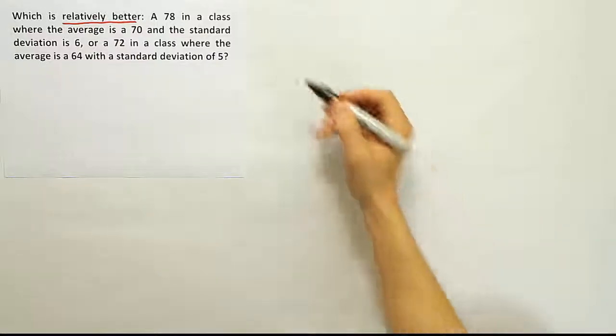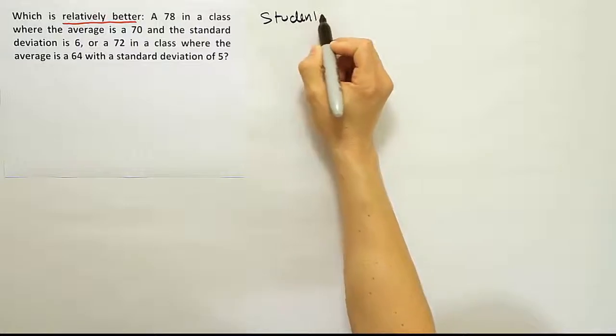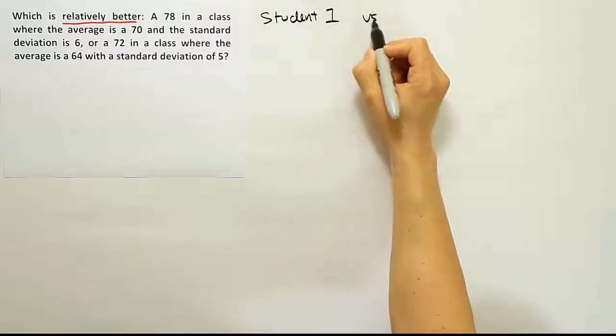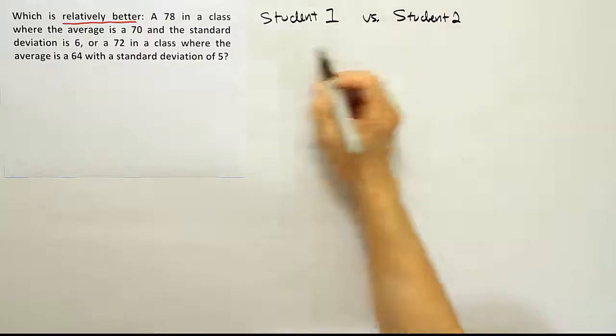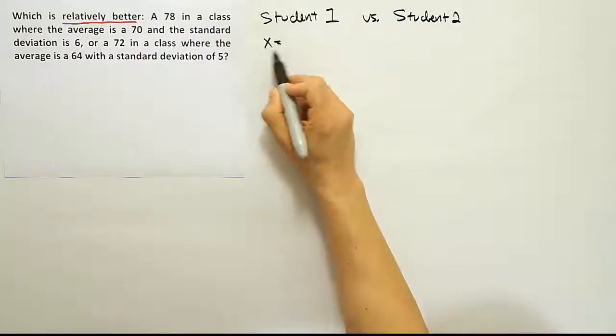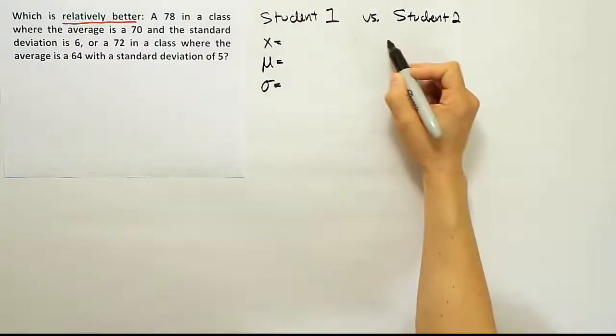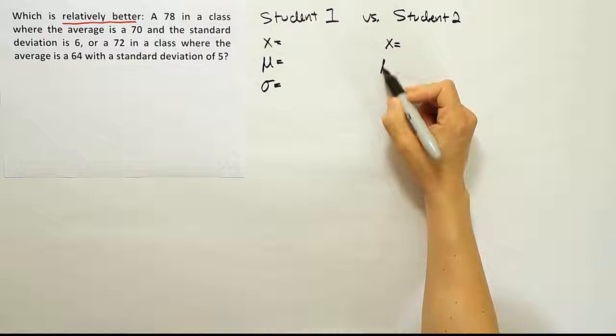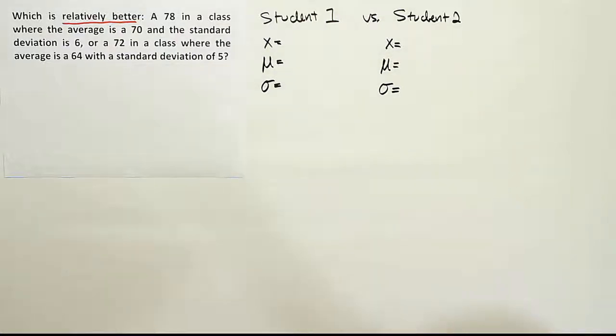So what we want to do first is list the information. So we'll say student 1 versus student 2. Now for each person we should have a test score which we'll call x, a mean for the class, and a standard deviation. So x, mean, standard deviation. We should have that for each group, for each person.